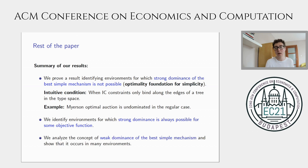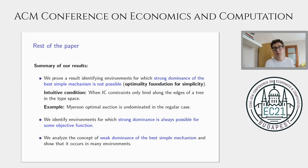In the last part of the paper, we look at weak dominance. Strong dominance requires the complex mechanism to always be strictly better than the best simple mechanism. Weak dominance is more permissive: the complex mechanism should never be worse and is sometimes strictly better. We show that weak dominance is very often possible — in many environments, including most environments where the designer is interested in revenue, it is possible to weakly dominate the best simple mechanism.